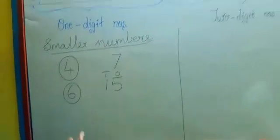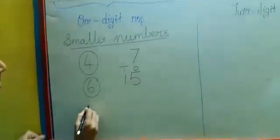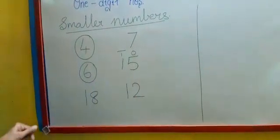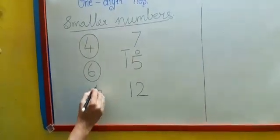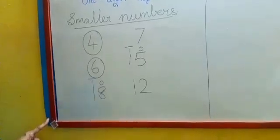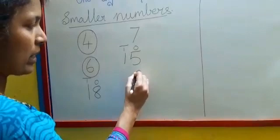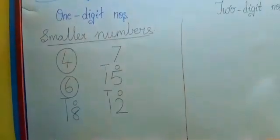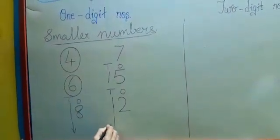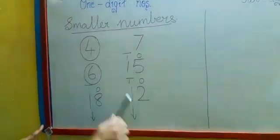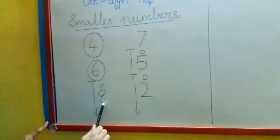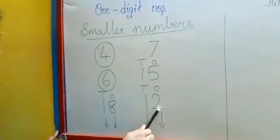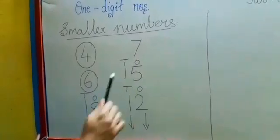Now we are going to compare two two-digit numbers: 18 and 12. 18 is a two-digit number — 8 is in the one's place and 1 is in the ten's place. In 12, 2 is in the one's place and 1 is in the ten's place. First, we compare the ten's place: here is 1, and here is also 1 — both are the same. Now we compare the one's place: here is 8, here is 2. So 2 is the smaller digit, and number 12 is the smaller number.